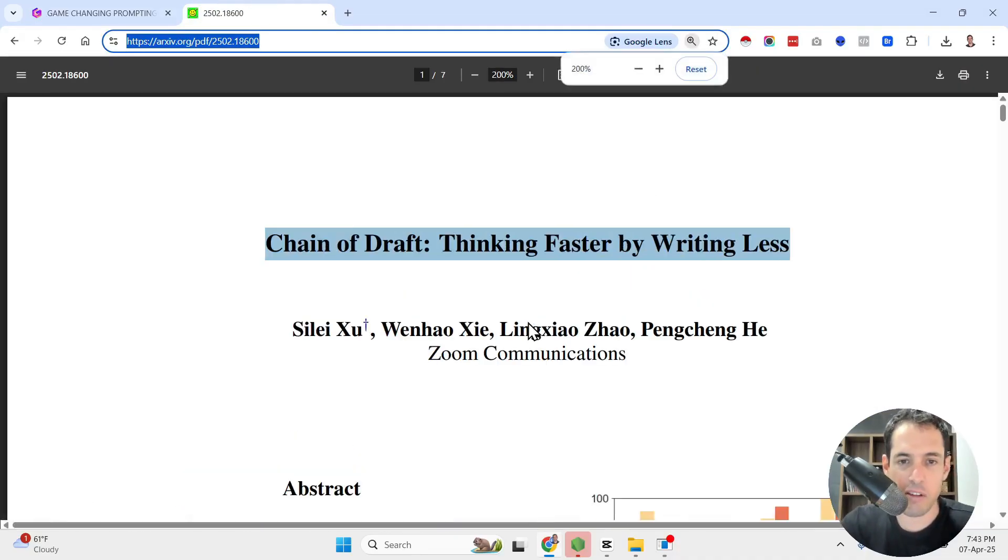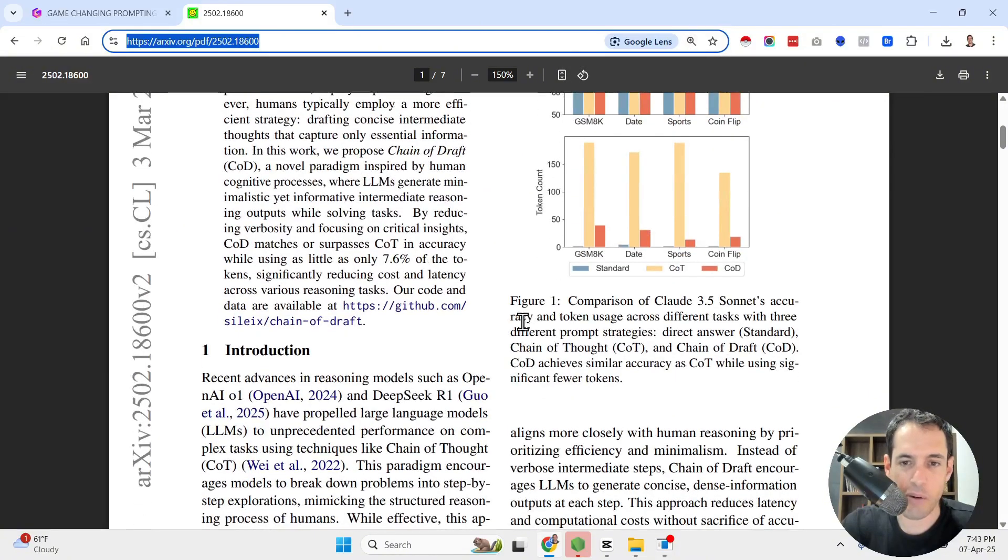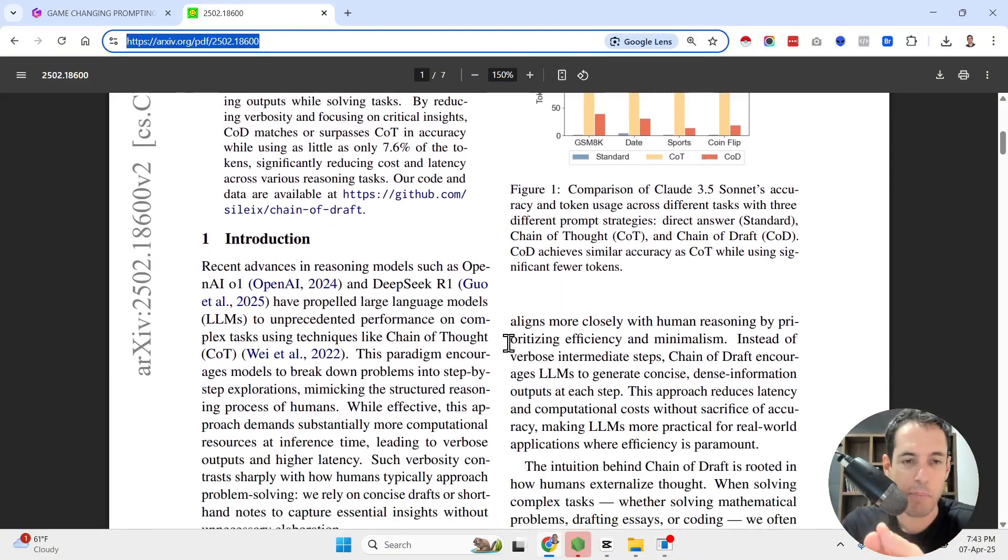So those of you who have been following me or probably anyone who has clicked on this video knows already the difference between a simple prompt and chain of thought, but let me just clarify. Basically a simple prompt is just asking the LLM, the large language model, OpenAI, GPT, or Claude, or Anthropic, to produce a certain output. This is a simple prompt.